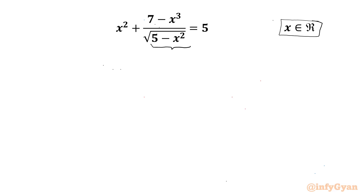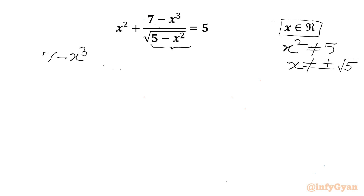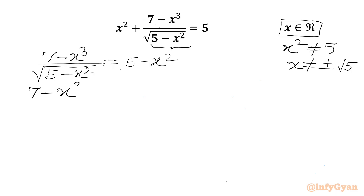The denominator cannot be 0, so x² cannot equal 5, or x cannot equal ±√5. Now I will take away x² from both sides, so 7 − x³ over √(5 − x²) = 5 − x². Or we can write 7 − x³ = (5 − x²) times √(5 − x²).